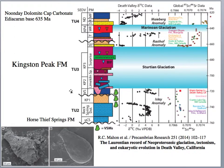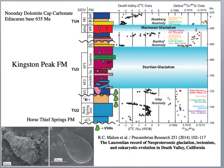Interestingly, some of the ages are constrained by fossils — these little vase-shaped microfossils, which are probably eukaryotic cells that developed during this time. We find them in units older than the Sturtian Glaciation, from the Kingston Peak Formation and Beck Springs Formation. This example is actually from the Grand Canyon region, but you can see they're similar — they have that vase-shaped, tapering type of microfossil.